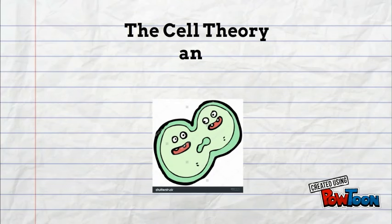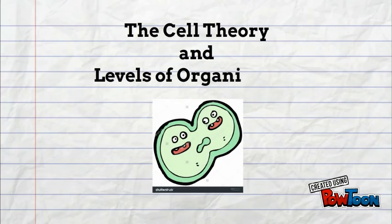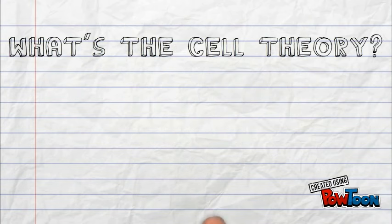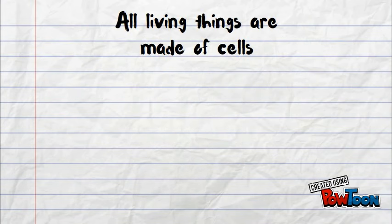We are learning about the cell theory and biological levels of organization. The cell theory has three major points. First, all living things are made of cells.